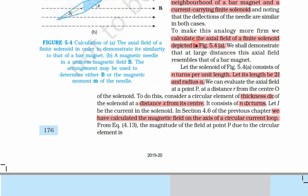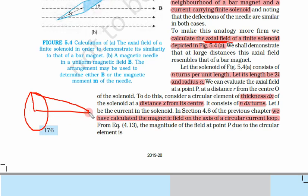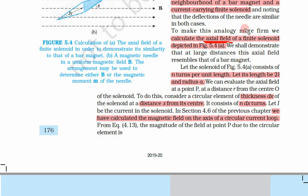Now let us calculate the axial field of a finite solenoid depicted in this figure. Previously we calculated the magnetic field on the axis due to a single current-carrying circular loop. If there are multiple loops, the magnetic field is simply n times that of a single loop. Similarly, here we are going to measure the axial field of this finite solenoid.